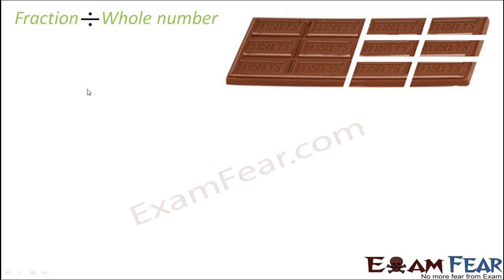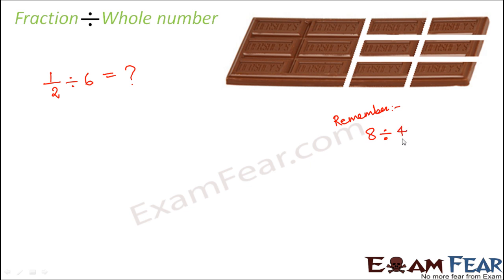Our challenge is: how do we do one-half divided by six? Let us have a quick recap of division of whole numbers. Do you remember that whenever you divide two whole numbers — for example, eight divided by four — it means eight times one-fourth? So a number divided by a certain number is the same as that number multiplied by the reciprocal of the divisor.